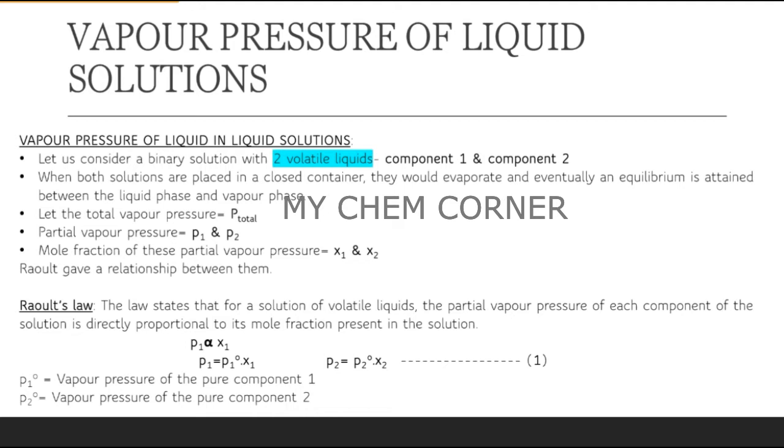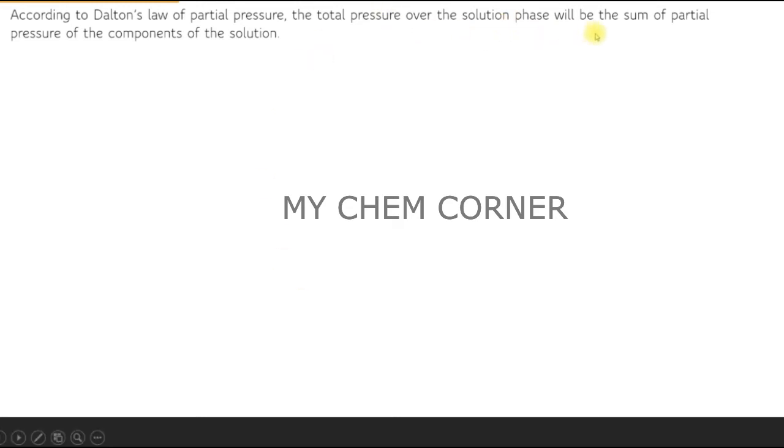When considering pressure with respect to gases or liquids, we use Dalton's Law of partial pressure. The total pressure over the solution phase — because these are volatile solutions with particles moving from the solution phase to the vapor phase — is the sum of the partial pressures of the components in the solution.